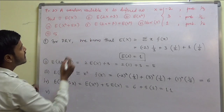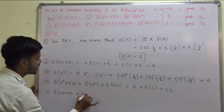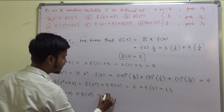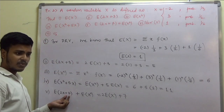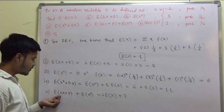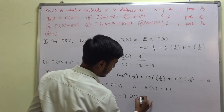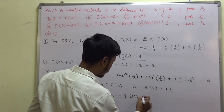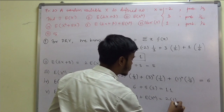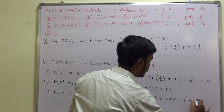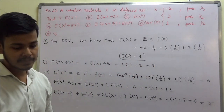Fifth one is expectation of 2x plus 7 plus expectation of x squared. Expectation of 2x plus 7 can be written as 2 times expectation of x plus 7 times expectation of 1, and expectation of 1 is 1. So this is 2 into 1 plus 7 plus expectation of x squared which is 6, and this comes out to be 15.